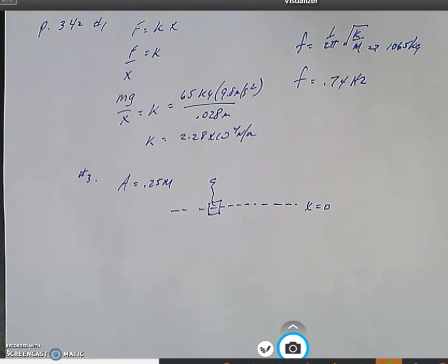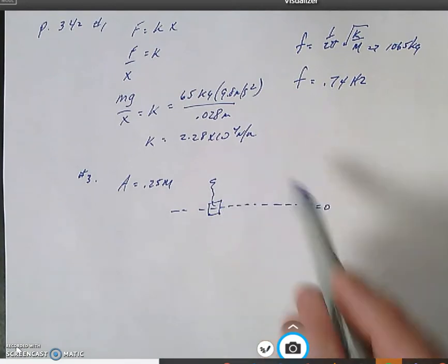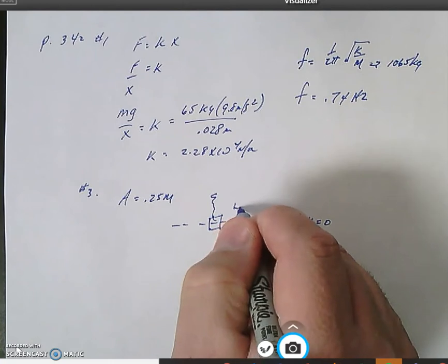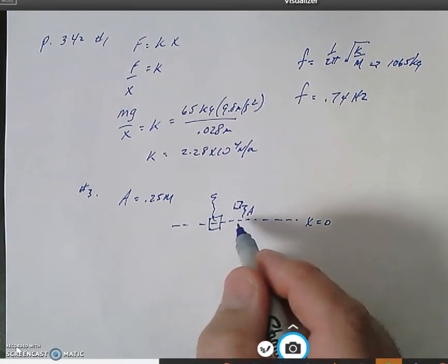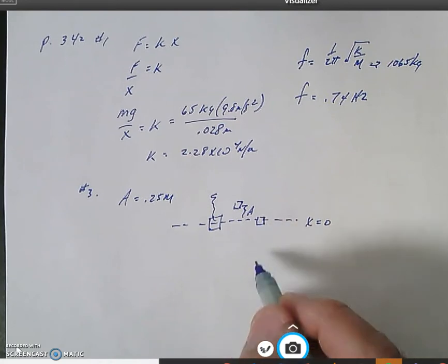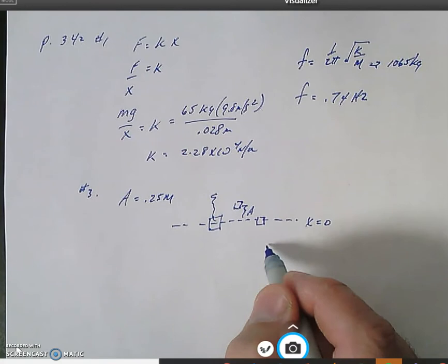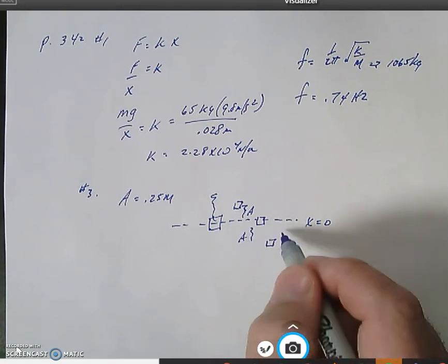is going to be a function of that amplitude. One period would take this spring here that's at the equilibrium spot, would take it up here which is a distance A, it would drop back to the equilibrium spot which is another distance A, it would drop down to the lower distance A,